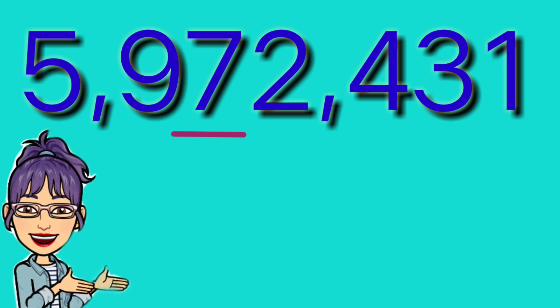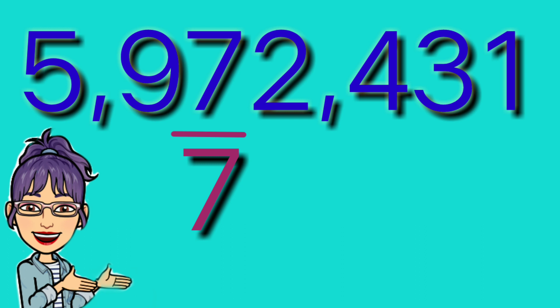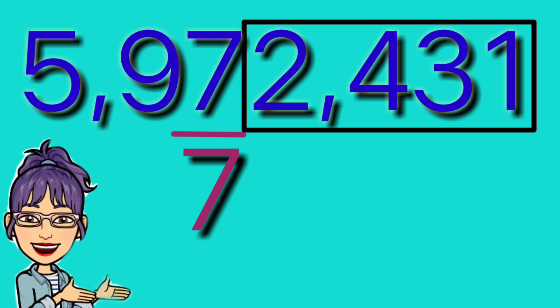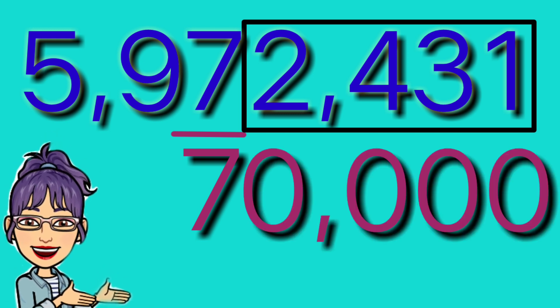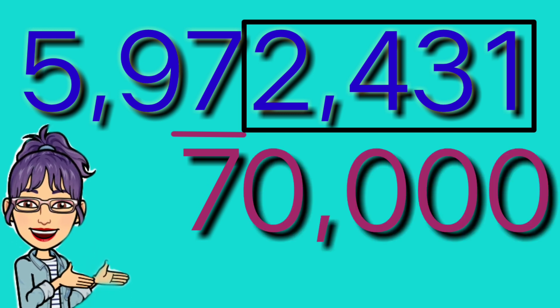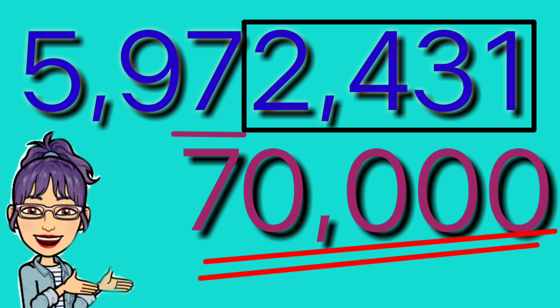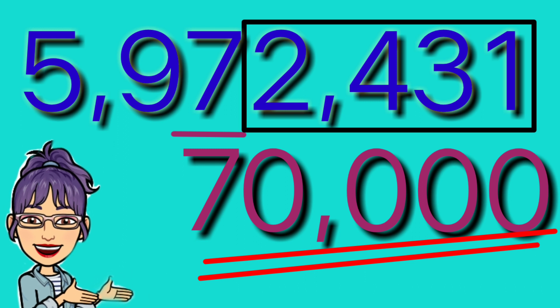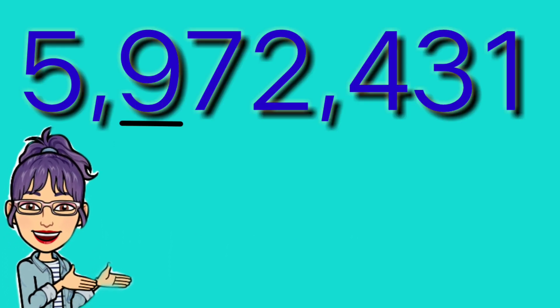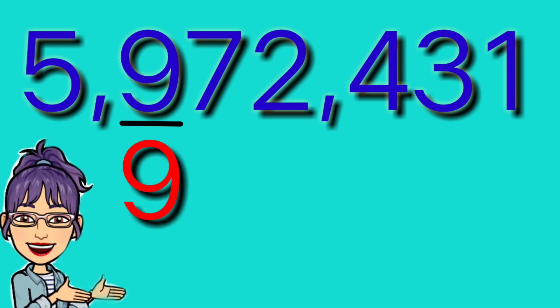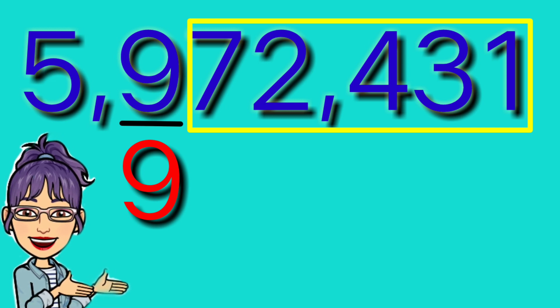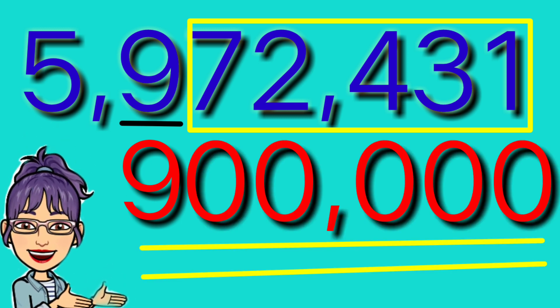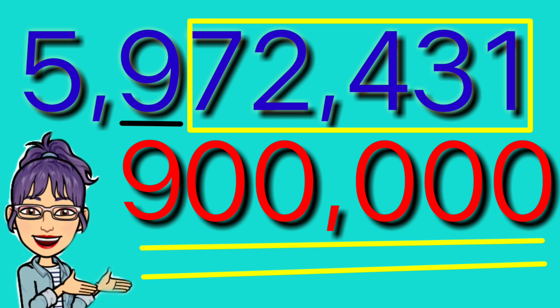Let me teach you how to write the value easily. For example, in the number 5,972,431, to get the value of digit 7: just copy the digit 7, then turn the digits to its right into zeros. The value of digit 7 is 70,000. Next, for digit 9: copy the digit 9, then turn the digits to its right into zeros. The value of digit 9 is 900,000.